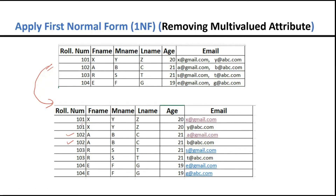Earlier, role number could be considered a primary key because all values were different. But now I can see that role number has lost its property of being a primary key — it repeats. Now in this case, the candidate key has become email, since all email values are different. So this is how you can apply the First Normal Form and remove composite and multi-valued attributes.